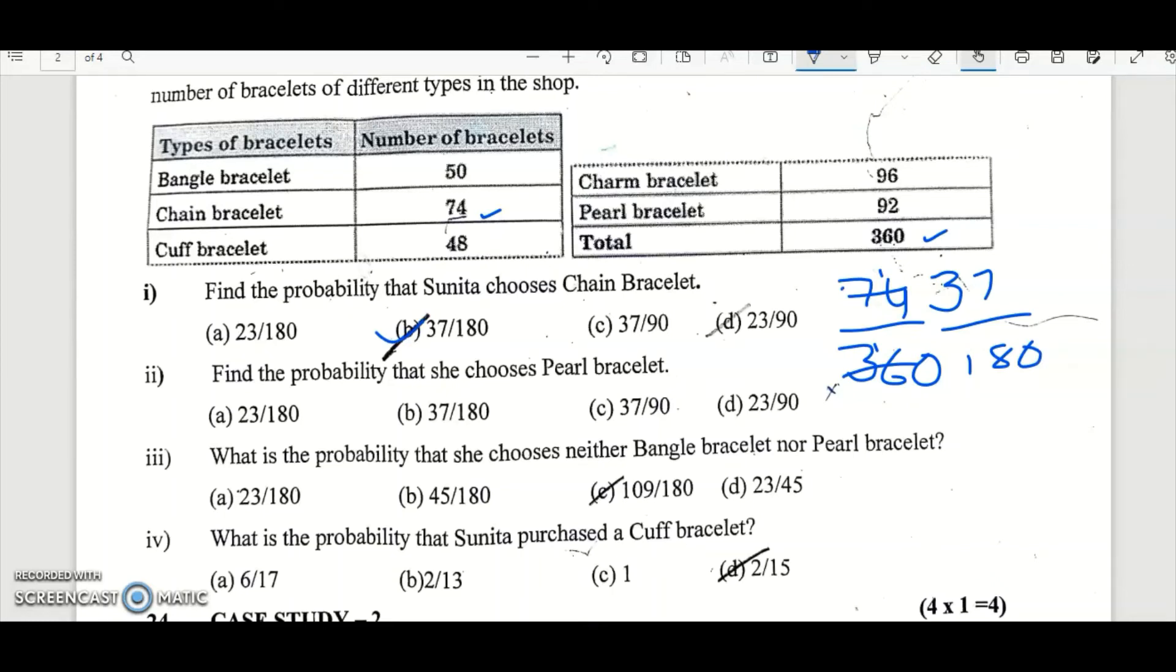Find the probability to choose pearl bracelet. How many pearl bracelets we have? 92. 92 by 360. That is 92 by 360, 46 by 180. Again we can further divide it. It is 23 by 90. So it will be option D, 23 by 90.